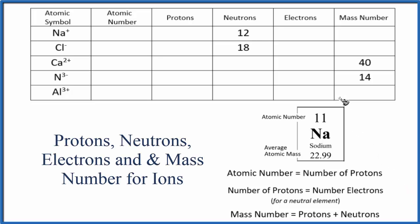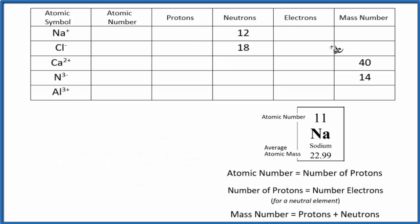In chemistry, we often deal with ions, and it's important to know how to work with them when you're trying to find the protons, neutrons, electrons, or the mass number for elements on the periodic table.